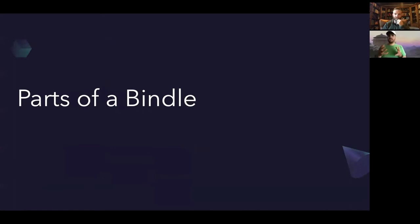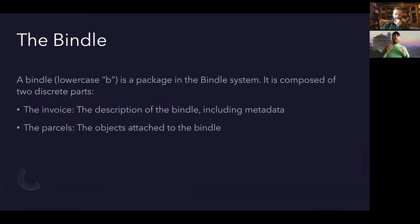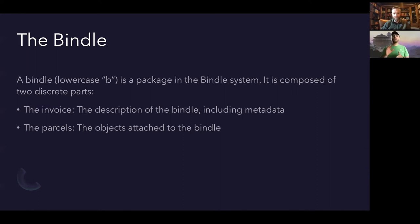So how does all of this get expressed — that complex graph we saw in the clip art — and what are the different parts of a Bindle? A bindle (lowercase b, to differentiate from the name of the project) is the name for the package inside of the Bindle system. It consists of two parts: first, the invoice, which is the description of the bindle including its metadata and a list of everything attached to it, and second, the parcels, which are the objects related to that invoice. Together those make a bindle.